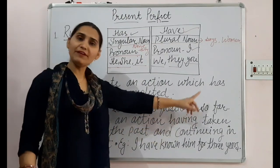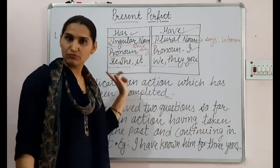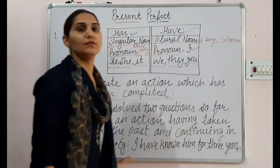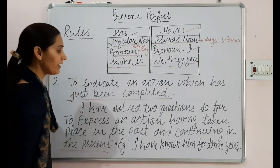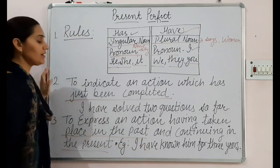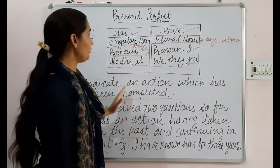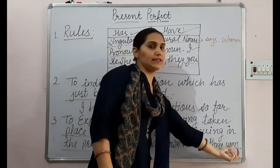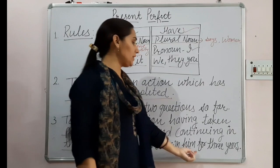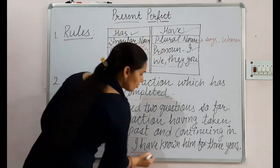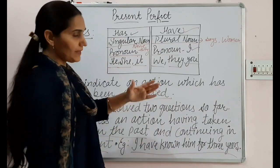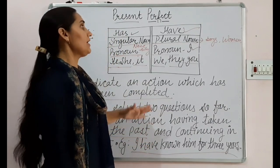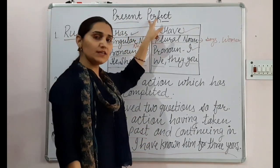The second usage rule: present perfect is used to express an action that started in the past and continues in the present. For example: 'I have known him for three years.' This means the action started in the past and is still continuing now — woh abhi usko jantah hai aur teen saal se usko jantah hai. In such situations, we use present perfect tense.